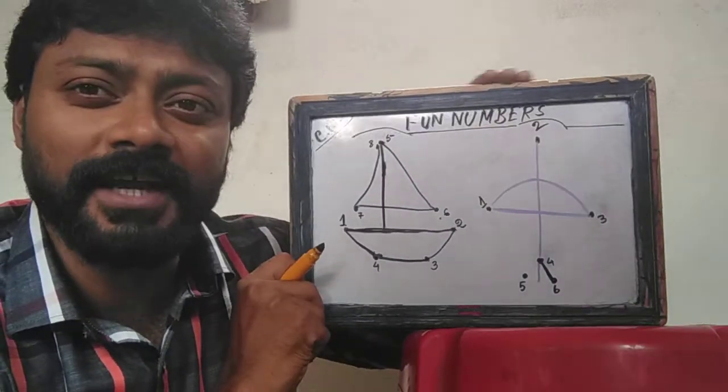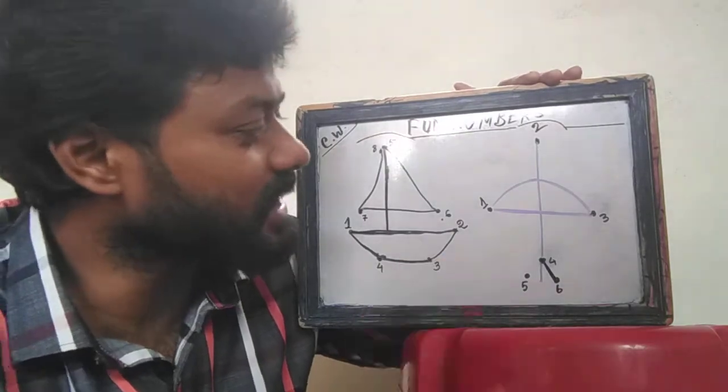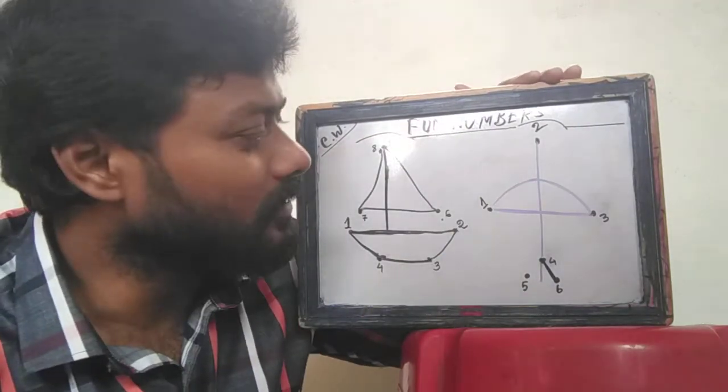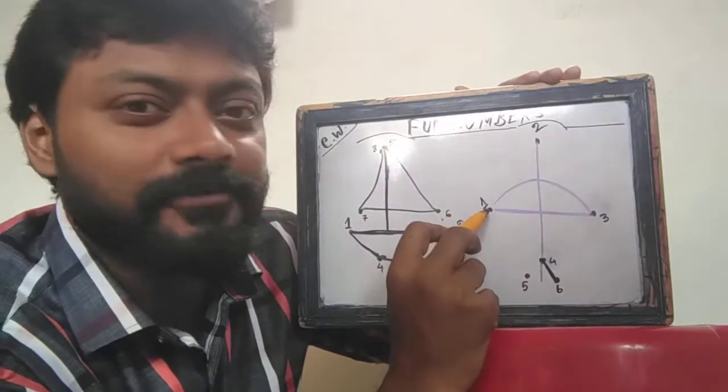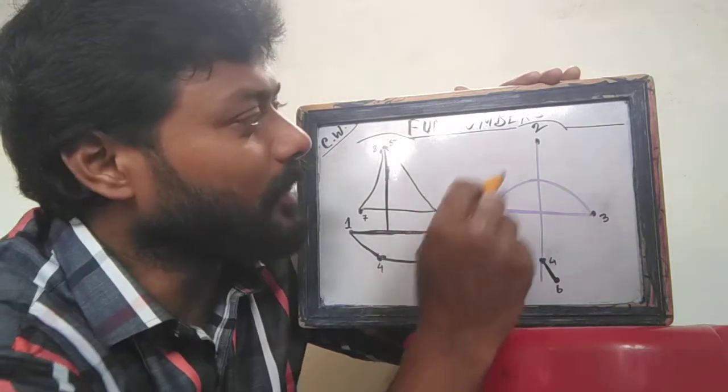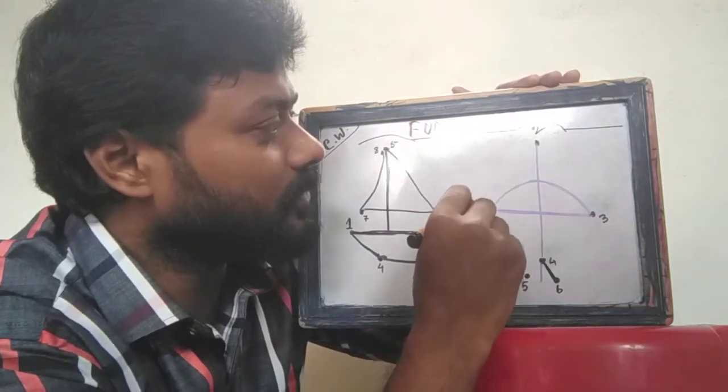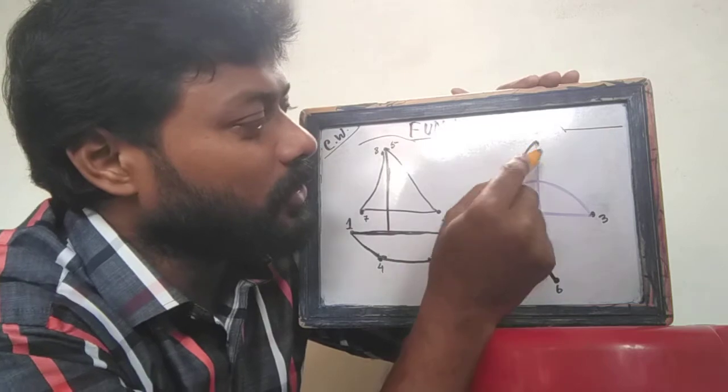And on the second picture, let's draw the second picture. Same thing here. We will start from 1, which is here. 1 to 2. So we are going to draw 1 to 2. 2 to 3.